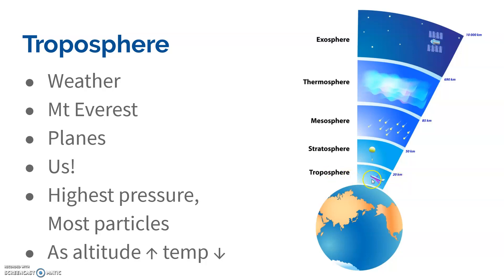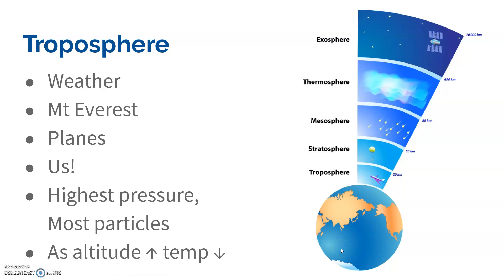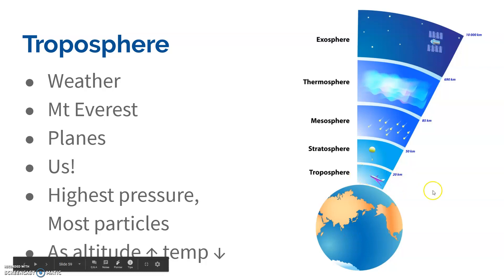In the troposphere, that is the layer around you and I. That's where we are, where all the weather is, and where Mount Everest is. We think of Mount Everest as being the tallest thing ever, but it's just up to the top of the first layer of the atmosphere, so there's way more stuff past that. It's as far as planes will go.